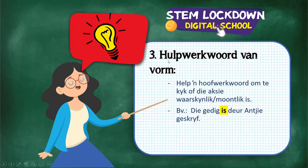Hulpwerkwoorde van vorm — this is form. It helps to see if the action is even possible in terms of form. 'Die gedig is deur Ainkie geskryf.' 'Geskryf' is again my verb and 'is' is my hulpwerkwoord. It helps to give meaning to the main verb because I cannot say 'die gedig deur Ainkie geskryf' — it will not make any sense. So we've now done two main types of verbs: selfstandige werkwoorde and hulpwerkwoorde van tyd, wyse en vorm.